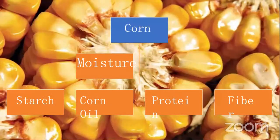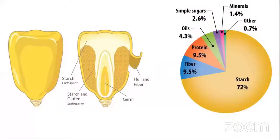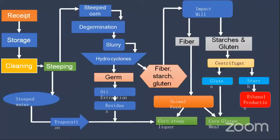In wet milling, moisture is added to the corn, and from this process we obtain starch, protein, fiber, and germ. From the germ, we will extract corn oil. So each and everything is separated and utilized. This is the overall process chart for wet milling.